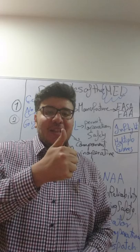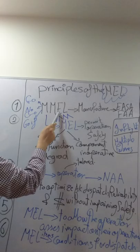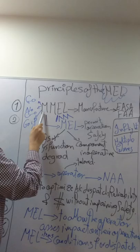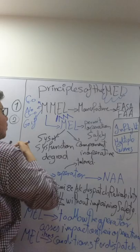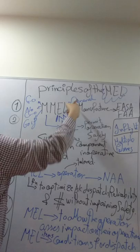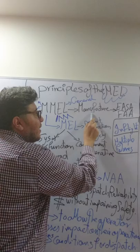Principle number one: the mother of the MEL is the Master Minimum Equipment List. 'Master' stands for the manufacturer. This means that the Master Minimum Equipment List is produced by the aircraft manufacturer, and it is a general one — for all operators of this aircraft or for a specific type.